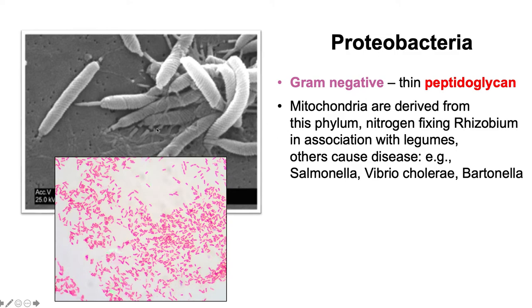Proteobacteria, these guys, after we do a gram stain, they have what are thin layers of peptidoglycan in their cell walls. So they're termed gram negative because they retain a pink color after the stain. So a lot of these guys, for example, salmonella, vibrio, bartonella, these are just different genera and species here of these proteobacteria.